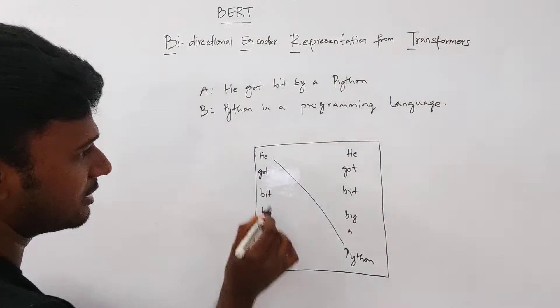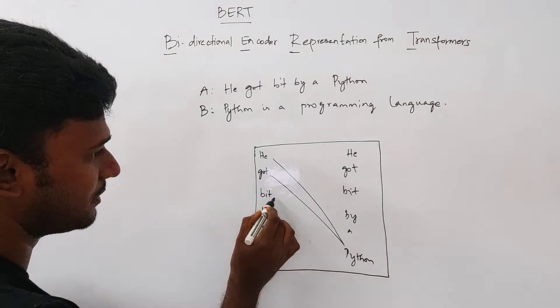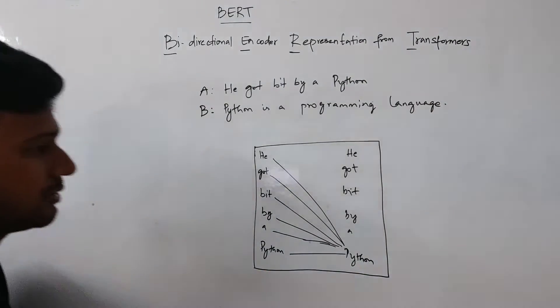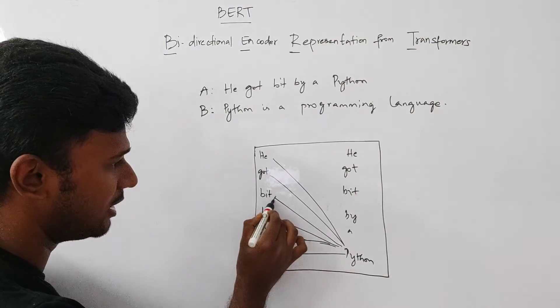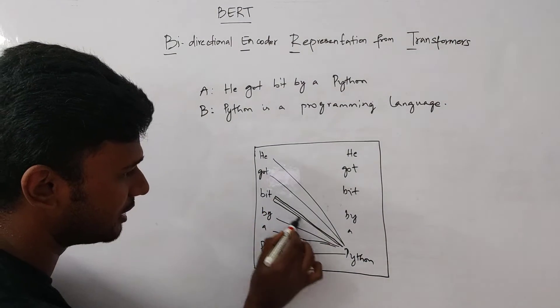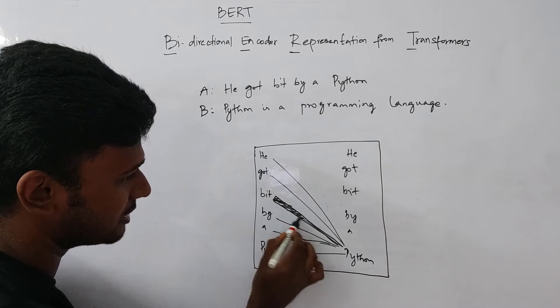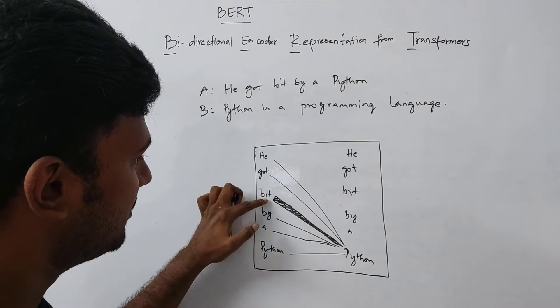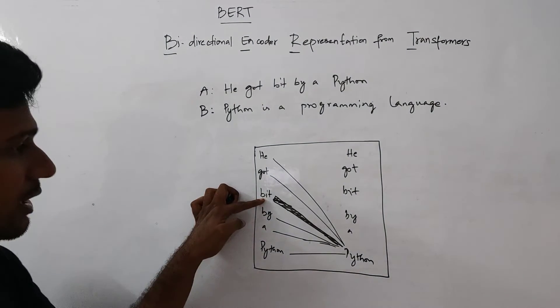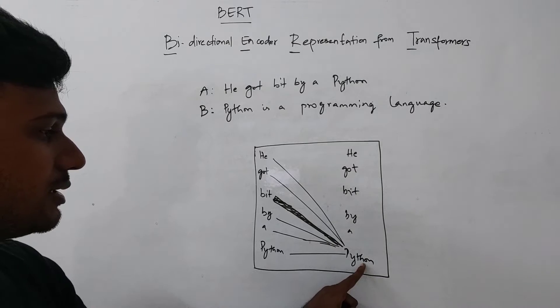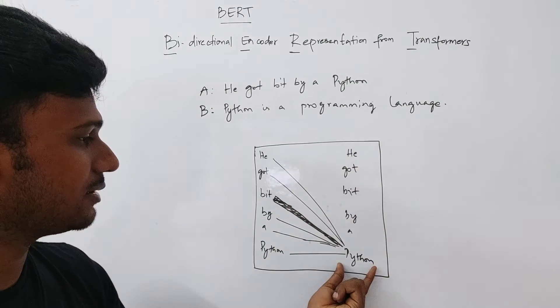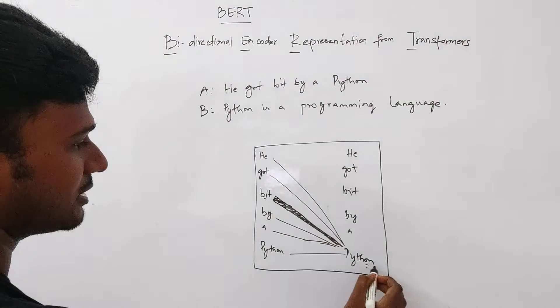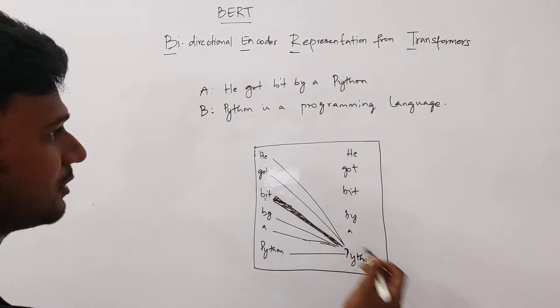So here we have, he is compared with python and got is compared with python, bit is compared with python, by is compared and A and similarly, this python is also compared with python. Now what happens is, this bit would have a different level of comparison. So I am drawing this line thicker than the other lines because this is one of the important words, bit is one of the important words that helps us understand how python is related to the sentence, how python is related to the context of the sentences. So here with BERT, we can easily predict that python is a snake and not a programming language.